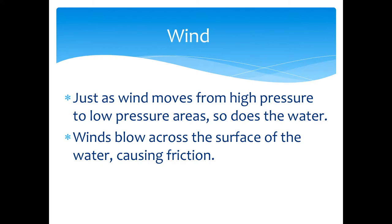Just as wind moves from high pressure to low pressure areas, so does water. Wind blows across the surface of water causing friction and directing those ocean currents. You know that the wind blows from the east to the west just north of the equator. If you think about it, that's exactly how hurricanes move — hurricanes move from east to west in the Atlantic Ocean because the wind drives the currents of the water.